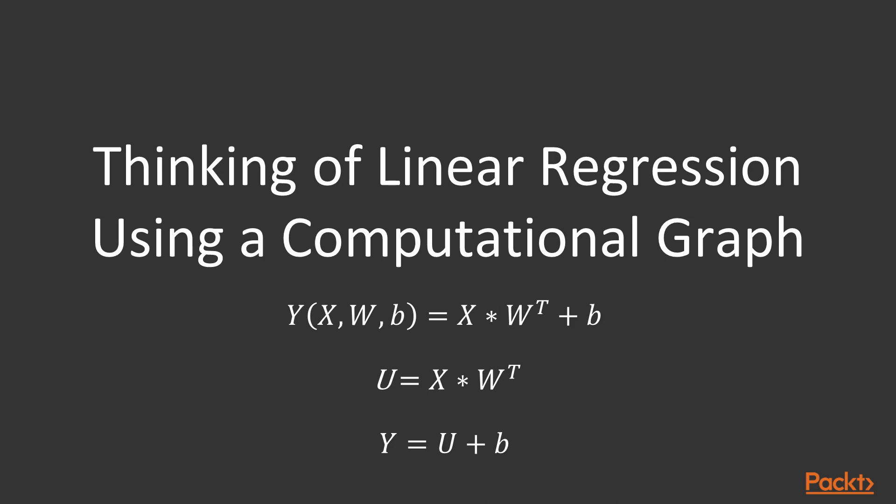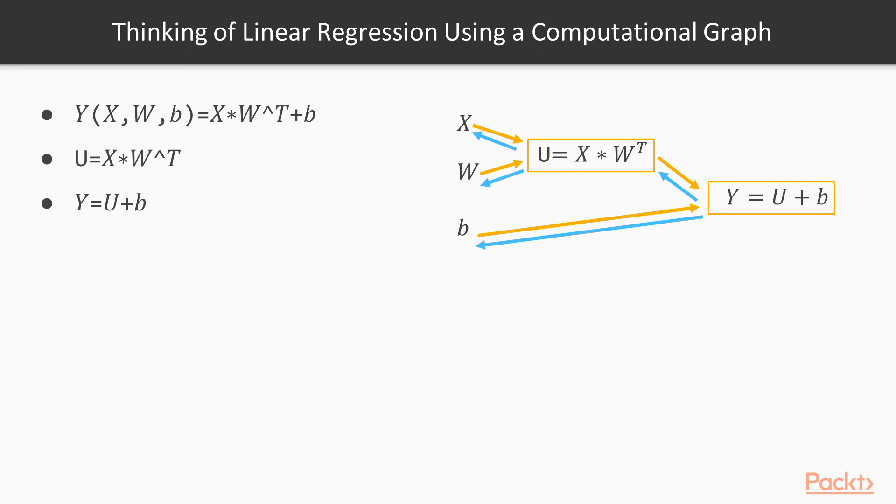Those are the two modules you can think about. By breaking down the computation into these two modules, we basically can implement the linear regressions using the Caffe2 library. You can implement x times transpose w as a convolutional operation. And the next operation which is u plus b is trivial to implement. Assume we are going to have a set of x and y in a regression problem. We can basically use stochastic gradient descent to find the w and b.